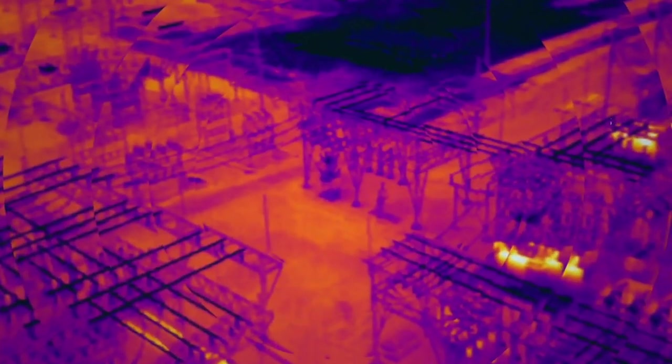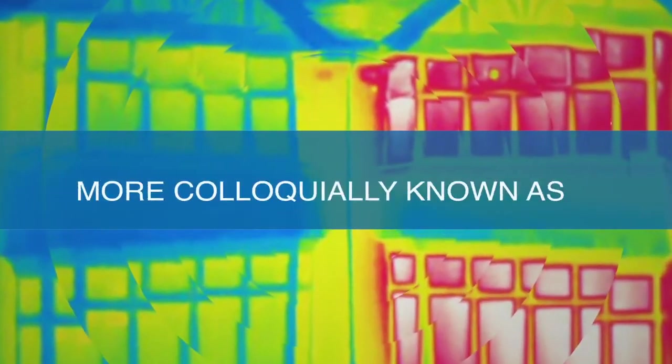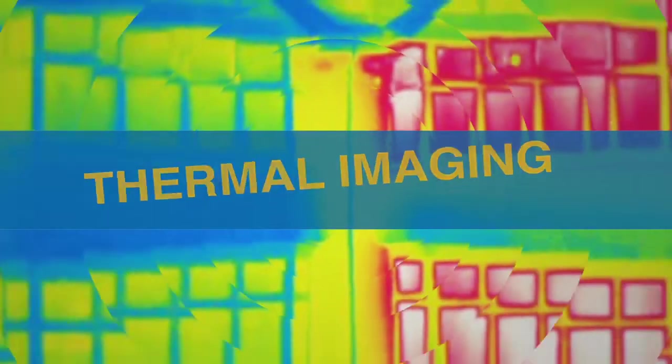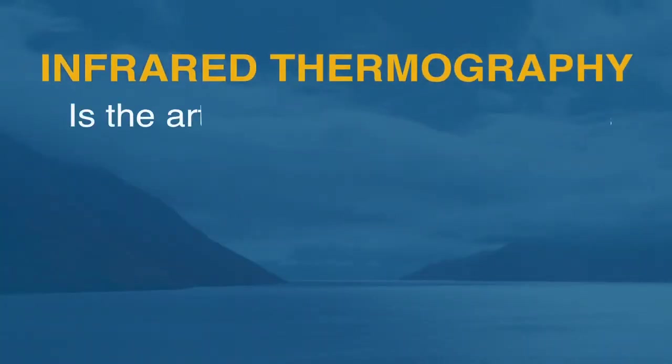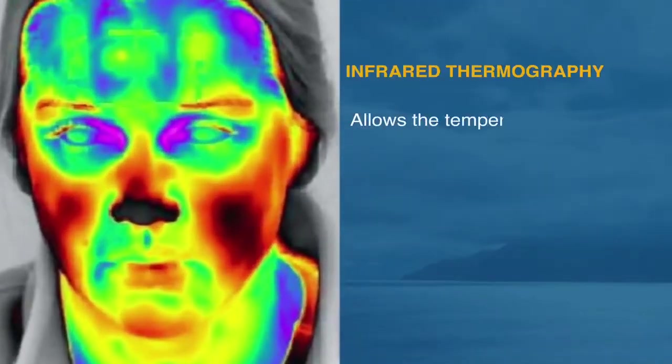If you've ever seen photos or videos where the images are made up of shades of red and yellow, that's called thermography, more colloquially known as thermal imaging. Infrared thermography is the art of transforming infrared image into a radiometric one, which allows the temperature values to be read from the image.